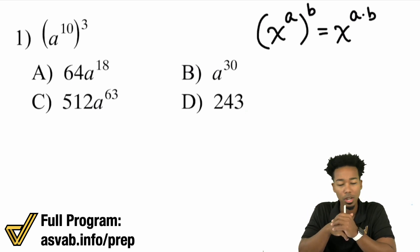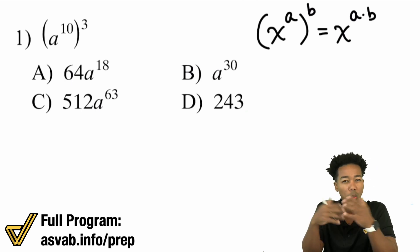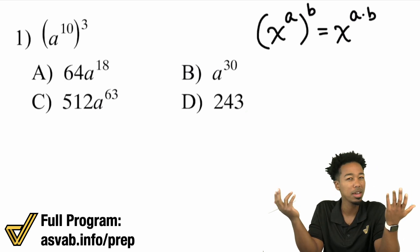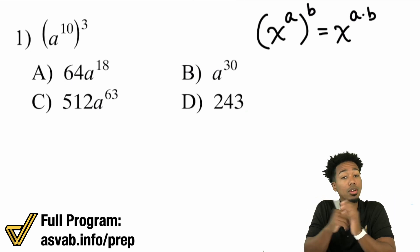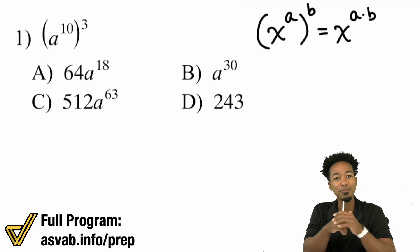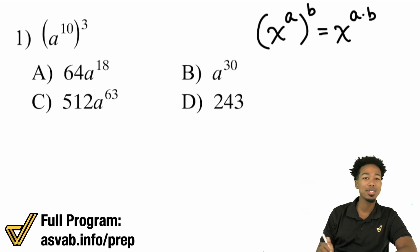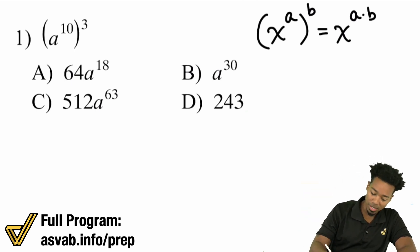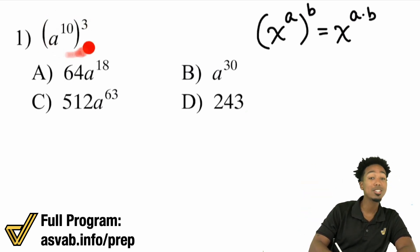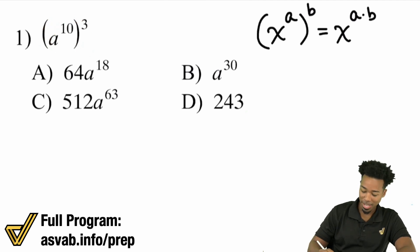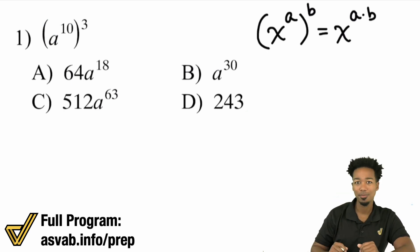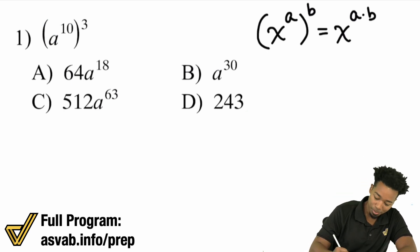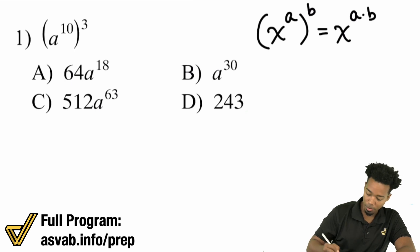So here we go. Why is it that you multiply the exponents when you have a power to a power? Well, it's actually very straightforward. Let me show you — I'm going to use this example: a to the power of 10, all to the power of 3. Is it true that 5 to the power of 3 means 5 times itself 3 times?